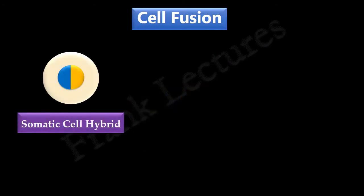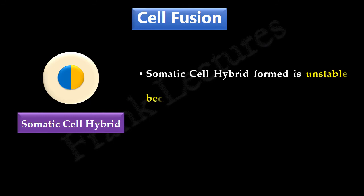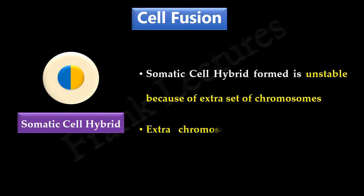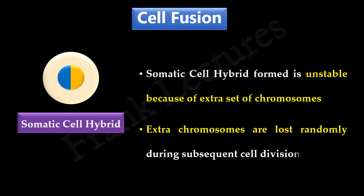Somatic cell hybrid is unstable. This is because of the presence of the extra set of chromosomes acquired during fusion. These extra chromosomes are lost randomly during subsequent cell divisions until the cell returns to the normal diploid state of one paired set of chromosomes.